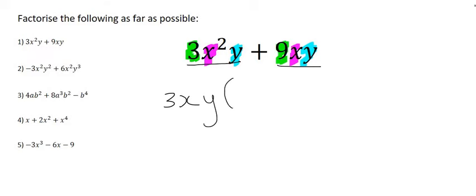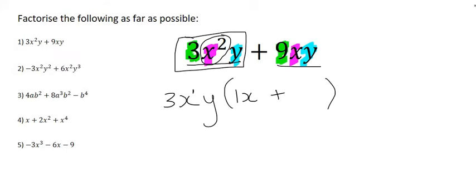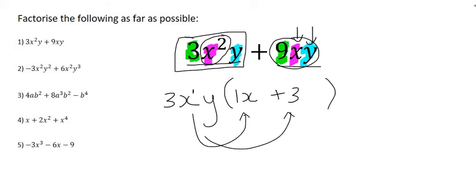We then open up a bracket and see what's left over. In the first term, the 3 was taken out completely so we're left with 1. This term originally had two x's — one was taken out — so we have x left over. There are no y's left over. For the second term, 9 divided by 3 is 3, and that term only had one x and one y, both of which were taken out. If you want to check, multiply 3xy back into the bracket and you should get the original expression.